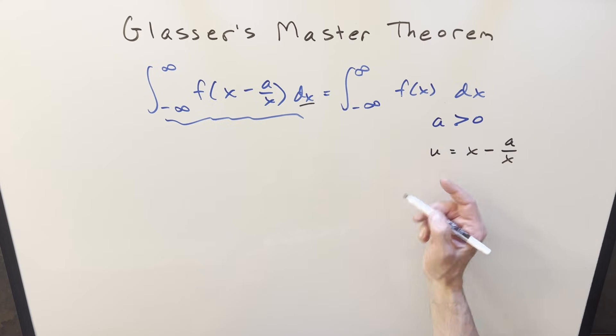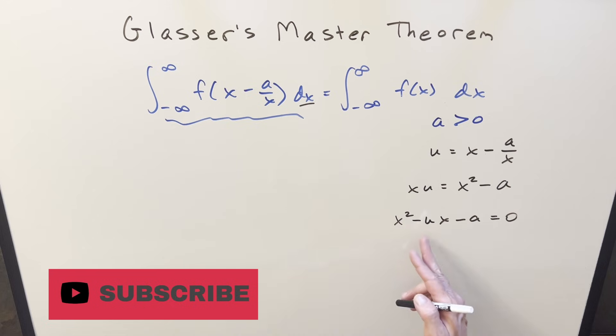So I can multiply in by x on both sides. Actually, let me leave this in. I'll multiply by x, and we're going to get x times u. This will become x squared. Here, the x's will cancel, and we get just minus a. Then I'll get everything on one side of the equation, forming a quadratic. It's going to be x squared minus x u minus a equals 0.